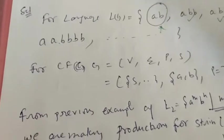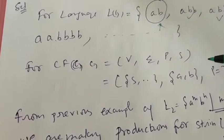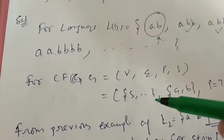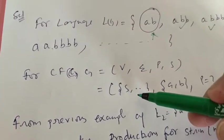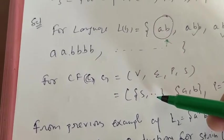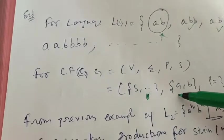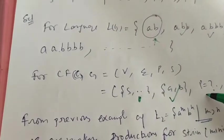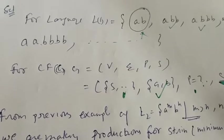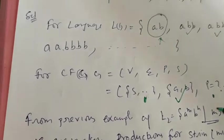Now for CFG G, we have grammar V, sigma, P and S. For the variable, we have S by default. The number of other variables, we don't know. We will get to know when other production comes. This a, b is correct. And then P is equal to question mark because production we have to make and then S, S is the start symbol.